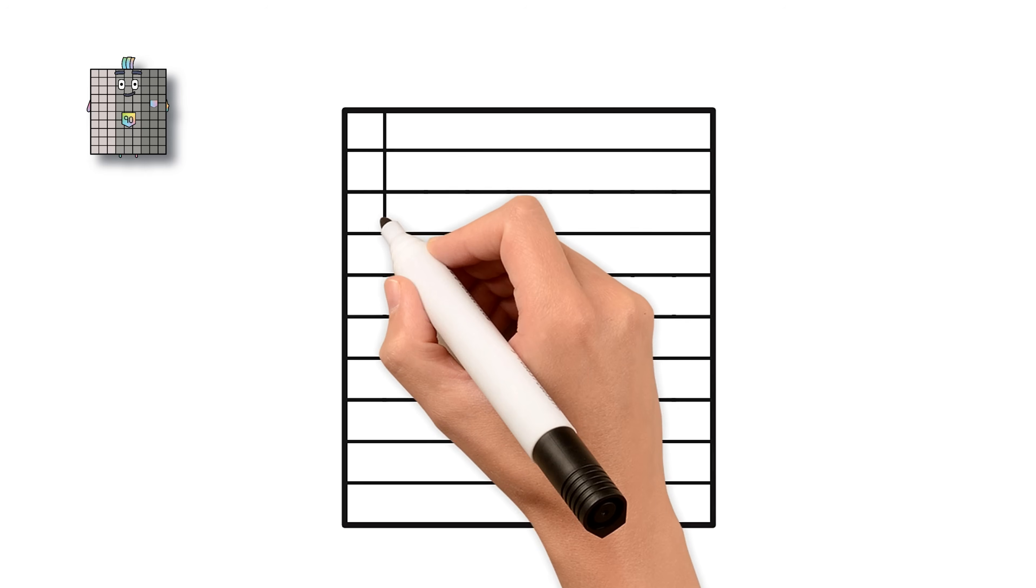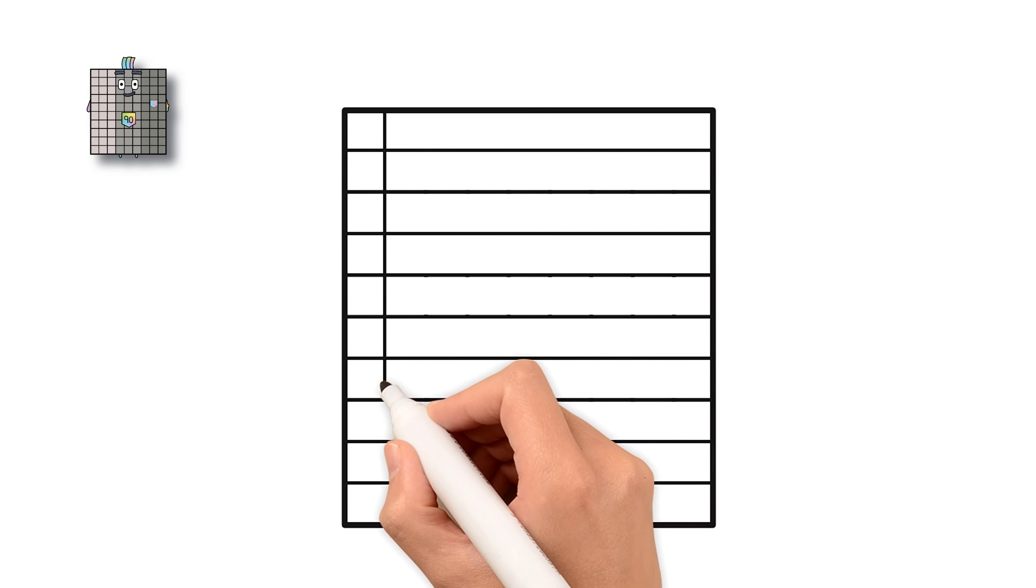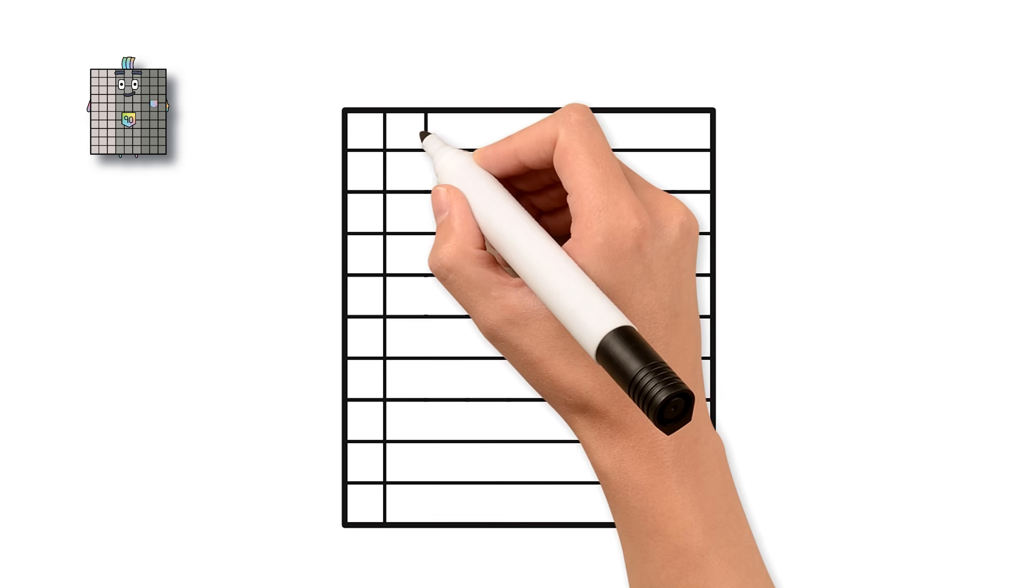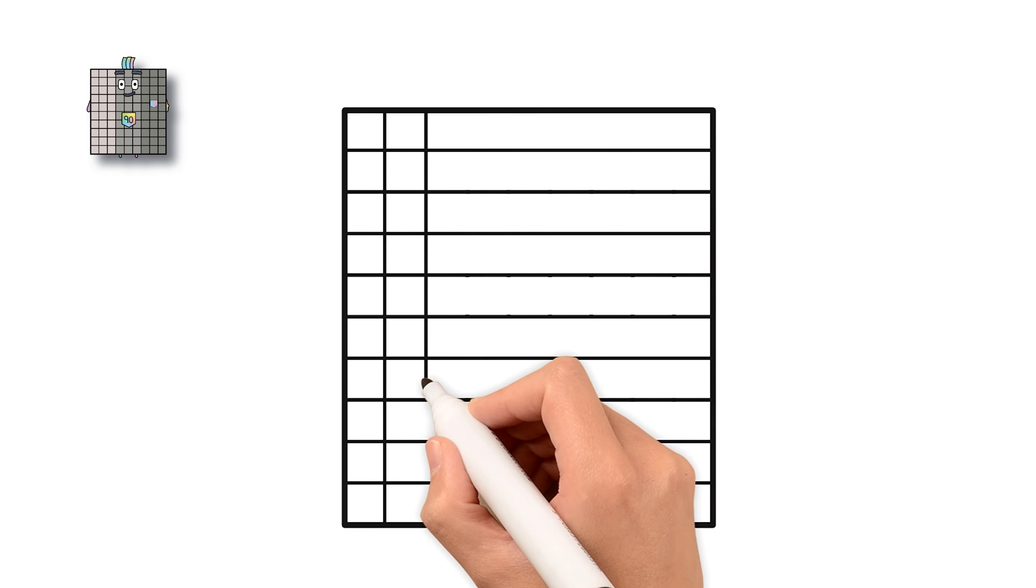Draw 8 vertical lines. Wow! That's a total of 90 little squares. Let's count by tens together.